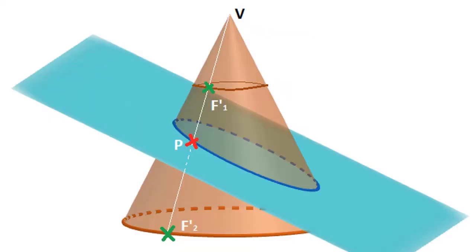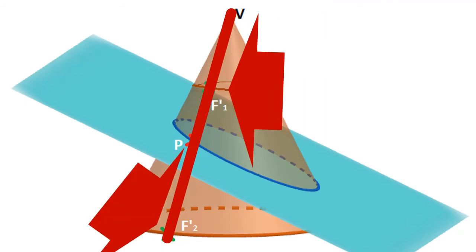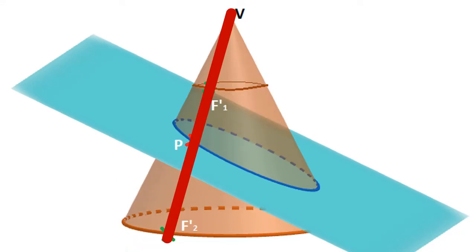So we have a line segment drawn from the vertex of the cone, point V, and it intersects these two circular cross sections at points F1 prime and F2 prime. That line segment intersects a tilted plane at some point P, and the position of point P along that line F1 prime F2 prime is going to vary depending on where we draw that line.